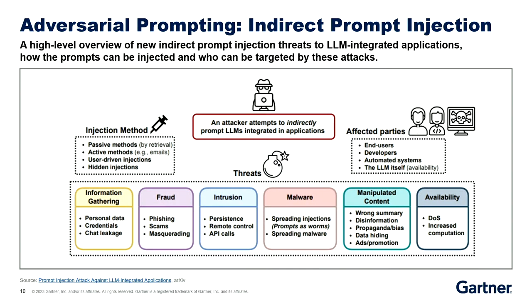There are new attack vectors. There's something called adversarial prompting. If you're in security, you know that information gathering, fraud, intrusion, and malware are not new. But what's new is they can put their instructions inside your prompts. We call it indirect prompt injection — they don't put it inside the questions into the model; they put it inside the documents that accompany the question. So it's easy for them to craft an attack and easy to spread it. You don't have to know much programming.